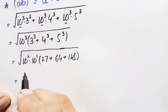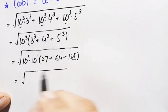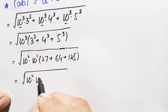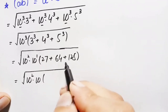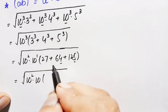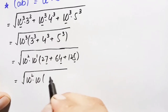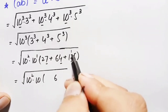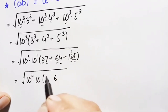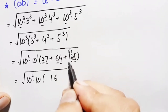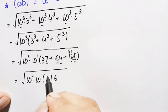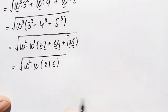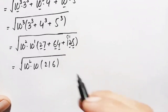This becomes the square root of 10 squared times 10 times (27 + 64 + 125). Adding these: 27 + 64 = 91, plus 125 = 216. So we have the square root of 10 squared times 10 times 216.